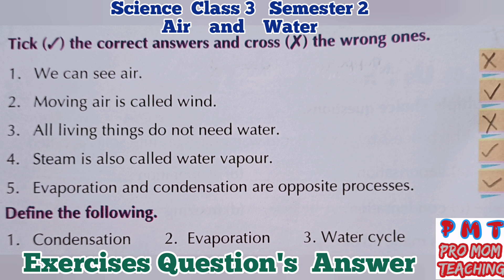Tick the correct answers and cross the wrong ones. First: we can see air — wrong. Second: moving air is called wind — yes, it is true.